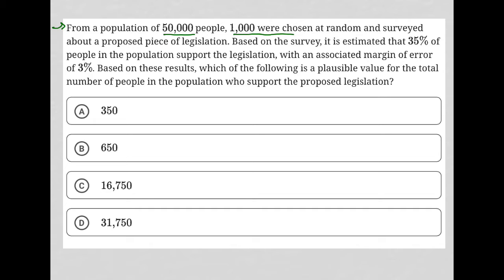Based on the survey, it is estimated that 35% of people in the population support the legislation with an associated margin of error of 3%. Based on these results, which of the following is a plausible value for the total number of people in the population who support the proposed legislation?